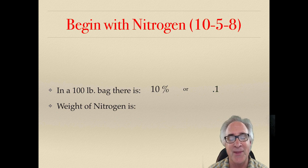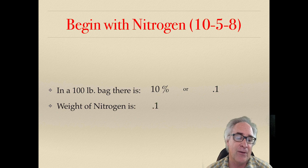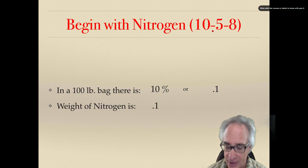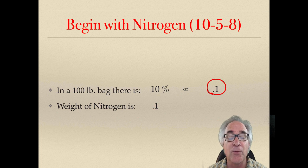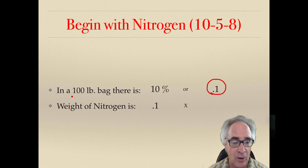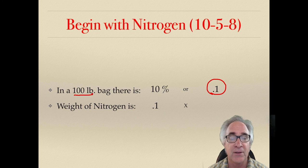Point 1 is the same thing as 10%. Now we have to figure out how to calculate the weight of it. So we take our decimal. In this case, it was and still is .1. We're going to take a look at that. And then what we're going to do is we're going to multiply that number by the weight of the bag. So in this case, it's a 100-pound bag. That should be pretty easy.